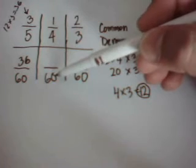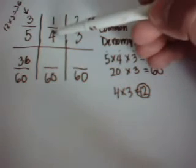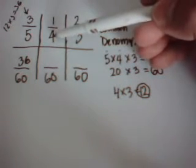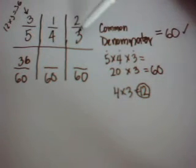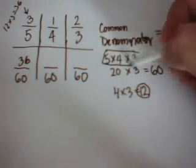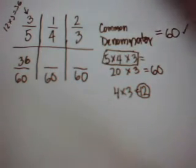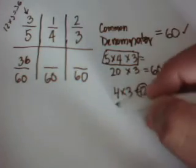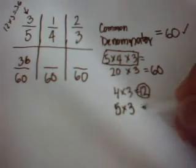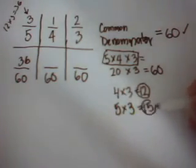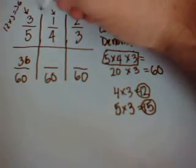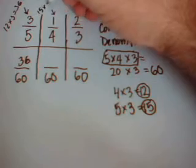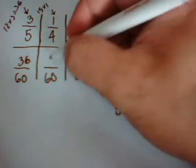Our next denominator again is sixty, but the original denominator that we have here is four. The denominators that are missing are going to be five and three, from our common denominator group. Since five and three are missing, we know that five times three is equal to fifteen. This fifteen, we multiply it by the numerator, and we say fifteen times one equals fifteen.